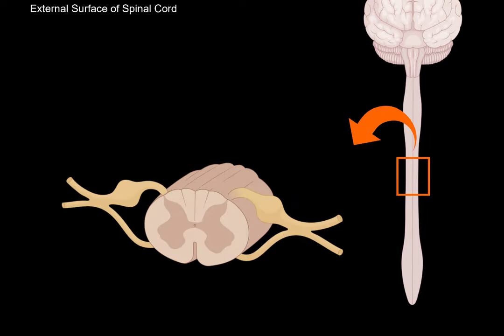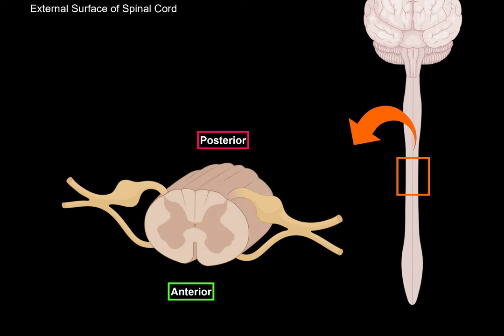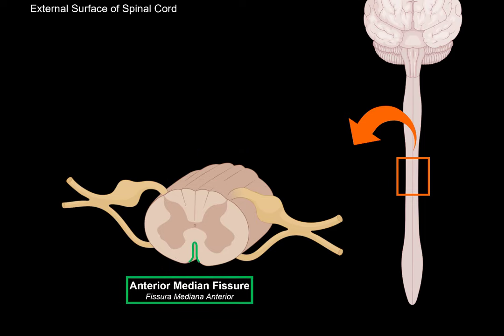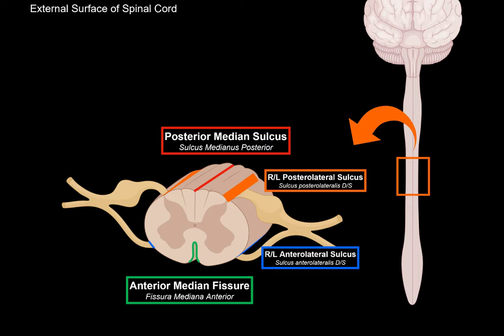This area with all the nerves is called the cauda equina. Now let's take a small part of the spinal cord and look at its external surface. The anterior part is where you'll find a deep fissure called the anterior median fissure. Posteriorly on the midline, you'll find the posterior median sulcus. On either side of the spinal cord, you'll find the right and left posterior lateral sulci, and the right and left anterior lateral sulci, from where the anterior and posterior roots of the spinal nerve will pass through.